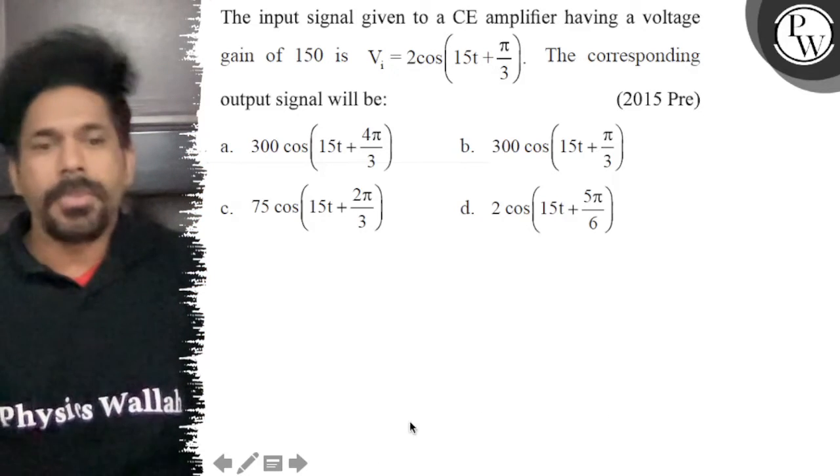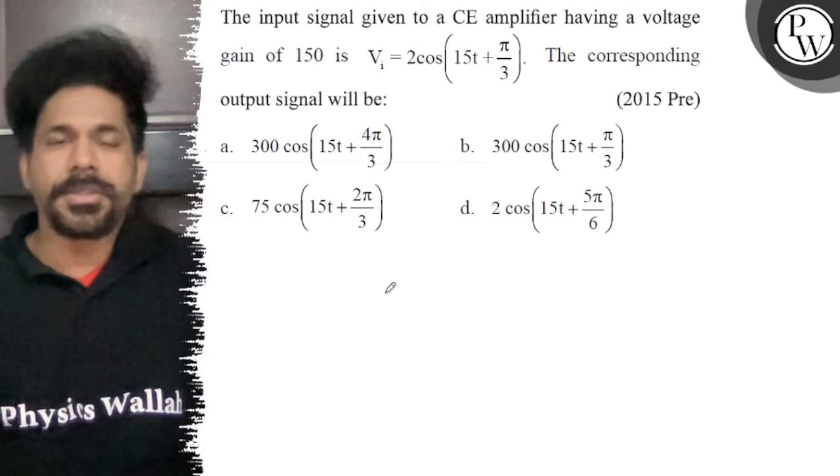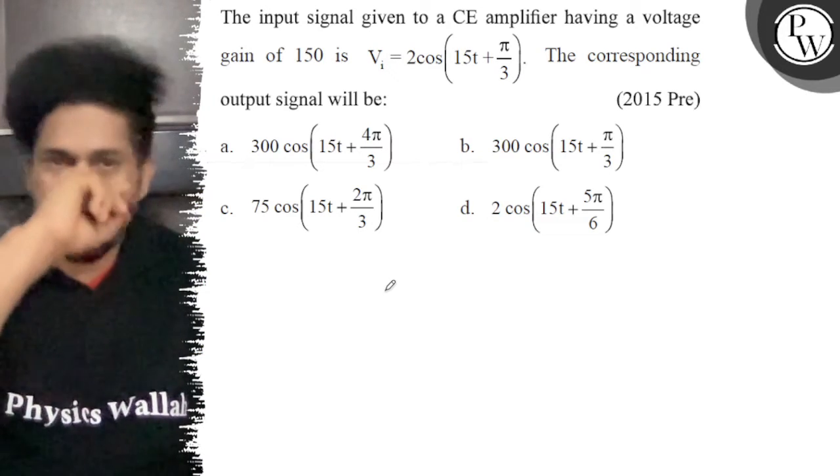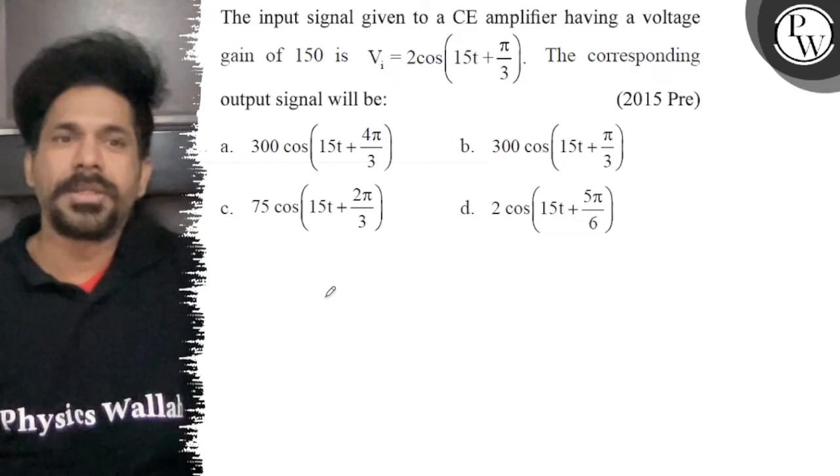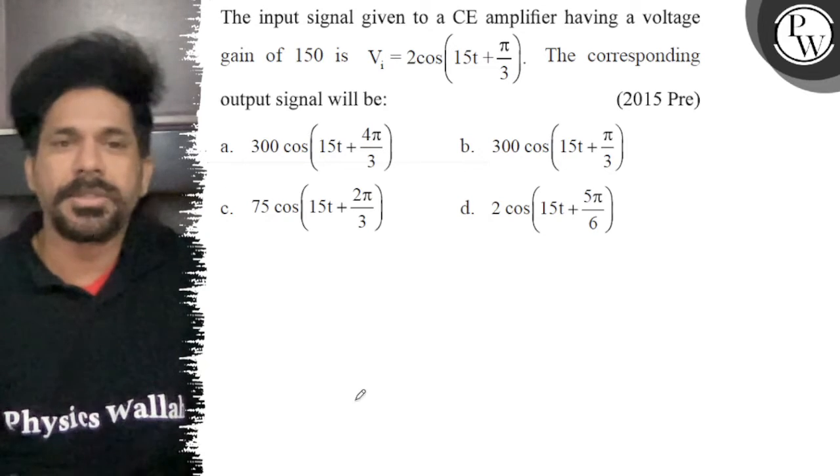Hello, let's see the question. The input signal given to a common emitter amplifier having a voltage gain of 150 is Vi = 2 cos(15t + π/3). The corresponding output signal will be...